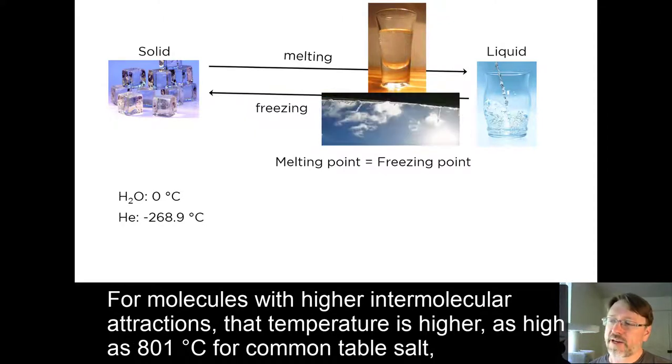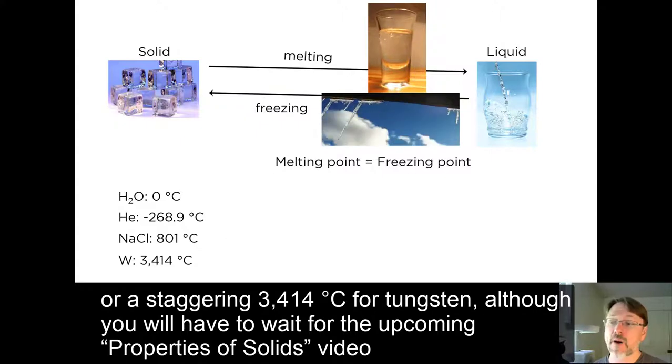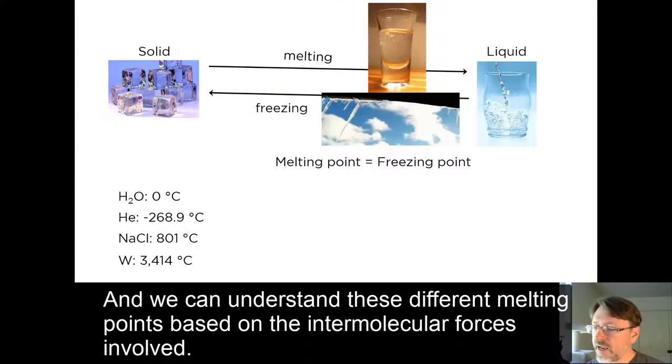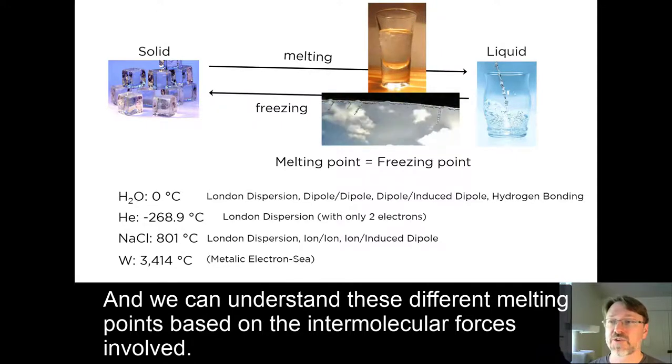For molecules with higher intermolecular attractions, that temperature is higher, as high as 801°C for common table salt, or a staggering 3414°C for tungsten, although you'll have to wait for the upcoming Properties of Solids video to understand what is going on in that case. And we can understand these different melting points based on the intermolecular forces involved.